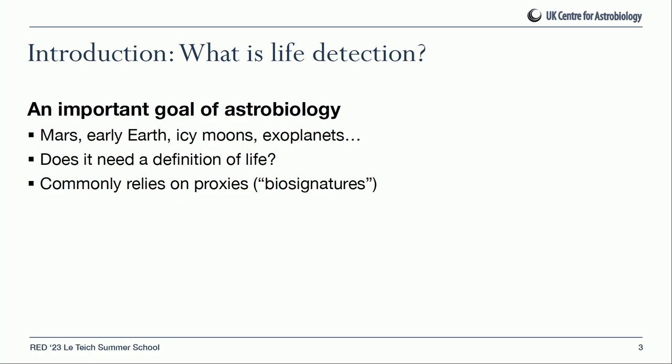Life detection is obviously a central goal in astrobiology — whether we're talking about Mars, the very early Earth where we're looking for the oldest evidence of life on our own planet, or whether we're talking about icy moons in the outer solar system like Europa, Enceladus, or exoplanets.